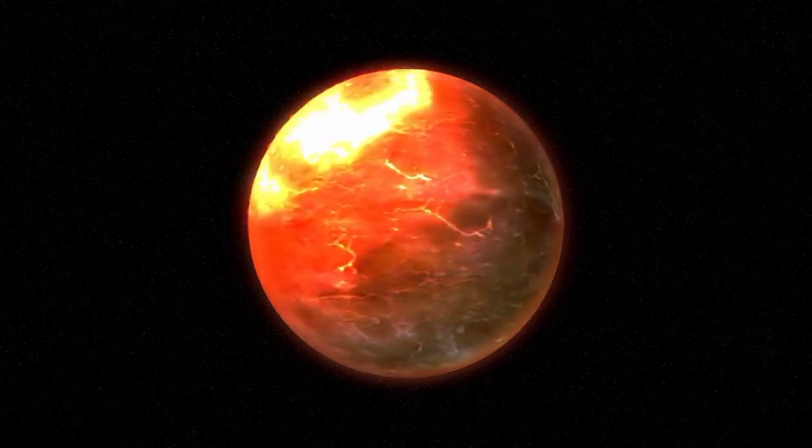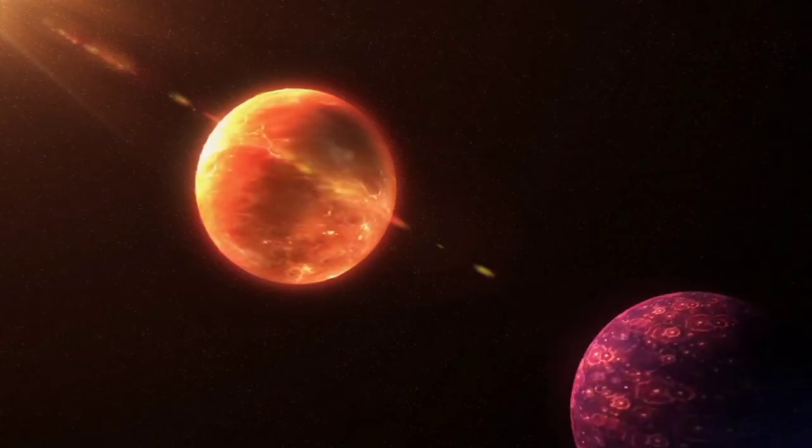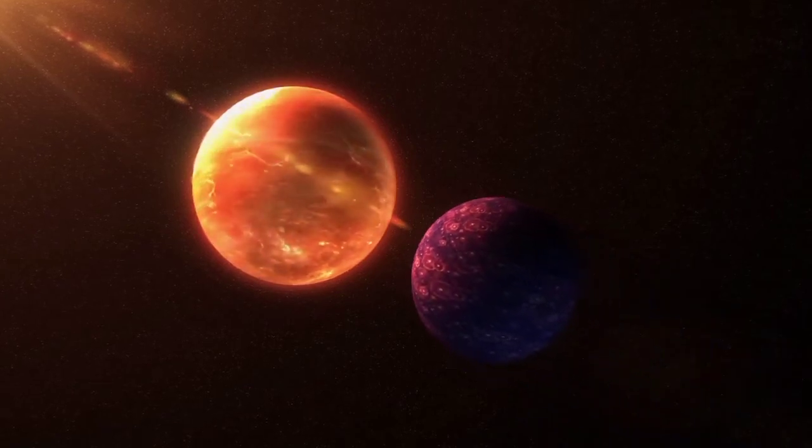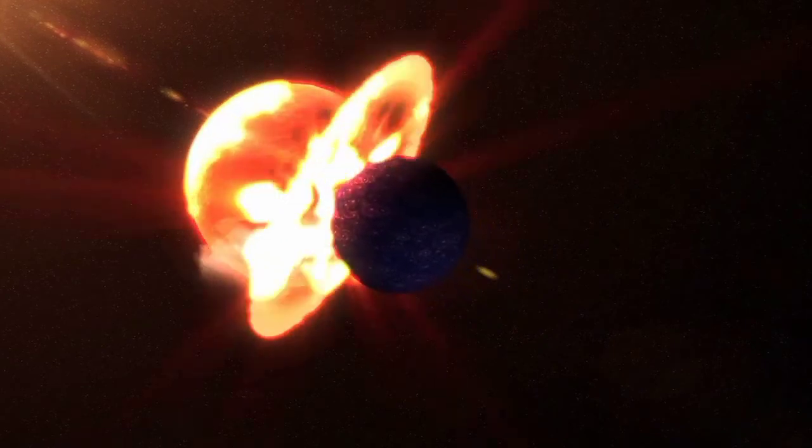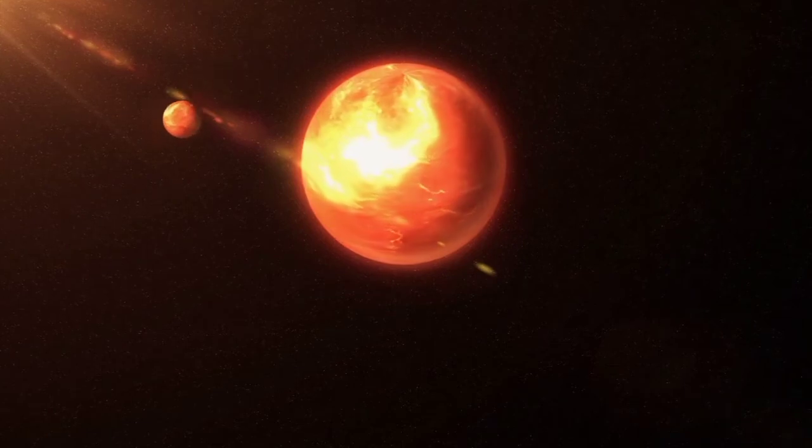Very early in its history, a Mars-sized object collided with the Earth, probably resulting in a dense ring of debris. However, unlike the outer planets, Earth's ring system soon coalesced to form the Moon.